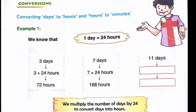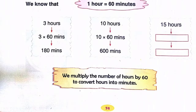Now for conversion: one day equals 24 hours. So three days equals 3 × 24 = 72 hours. Seven days equals 7 × 24 = 168 hours. Eleven days equals 11 × 24 = 264 hours. You have to convert all these into hours.